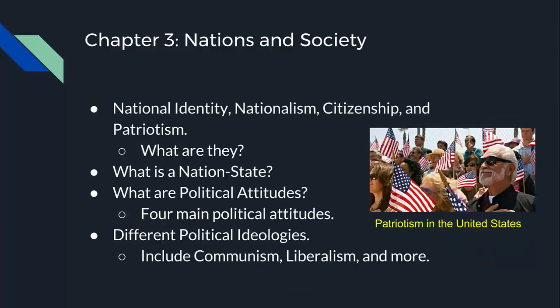Chapter 3 talks about nations and society, with four main points: national identity, nationalism, citizenship, and patriotism. National identity is an institution that binds people together through common political aspirations. Nationalism is a pride in one's people and a belief that they have their own sovereign political destiny. Citizenship can be defined as an individual's or group's relation to the state. And patriotism is a pride in one's state.